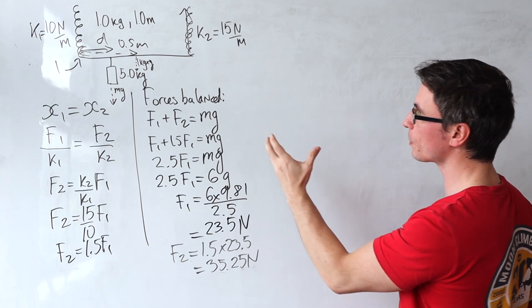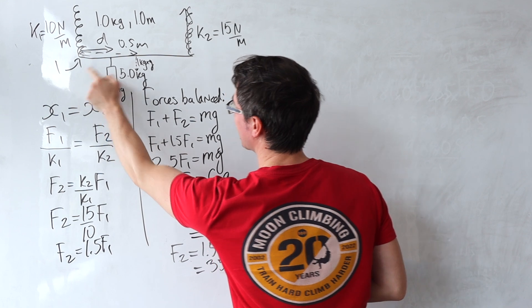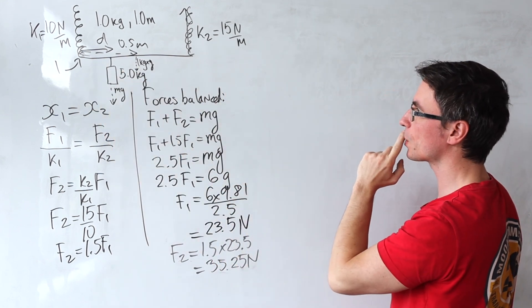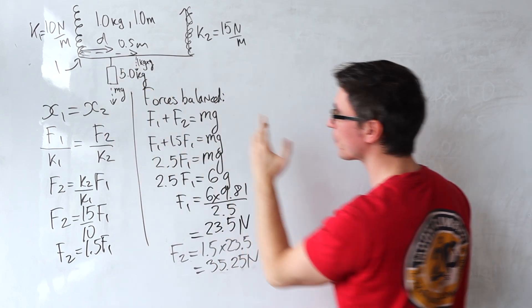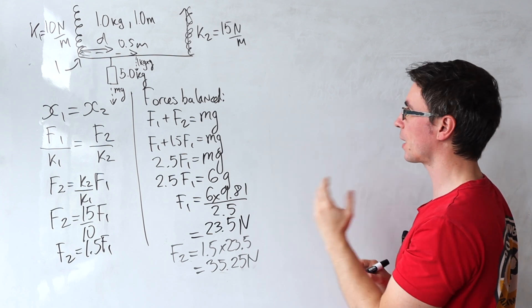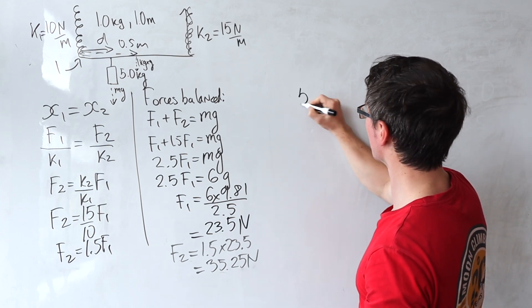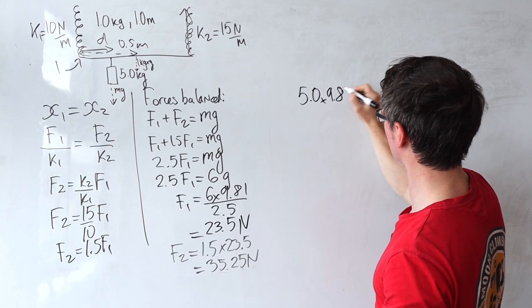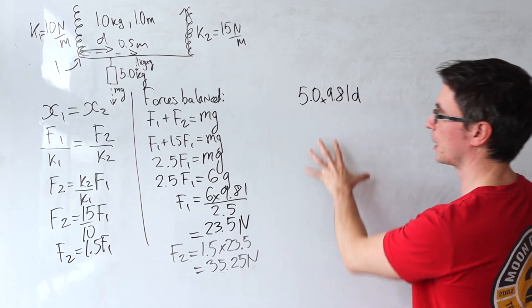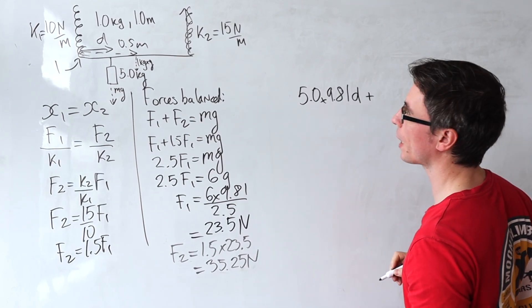Okay, so with respect to spring number one, we're going to have the 5 kilogram mass at a distance d, so it's going to be 5.0 multiply that by 9.81 multiply that by d.